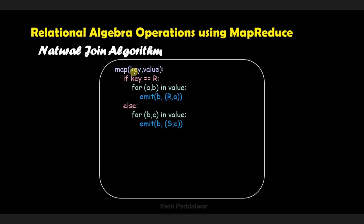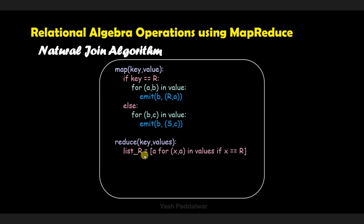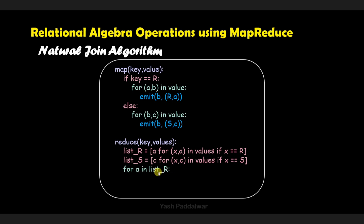If the condition says the current relation is R, we emit the key as B and the value as (R, A). Otherwise, if the relation is S, we emit the key as B and the value as (S, C). That was the Map task. Now in the Reduce task, we will make two lists. The first list will contain all values under any uncommon attribute present in relation R. We iterate over all values and check if the current relation is R and if the attribute is not common between the two relations, then we append it to the list of relation R.